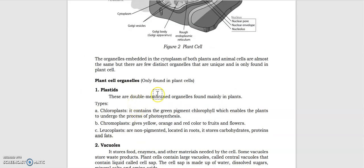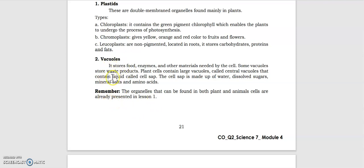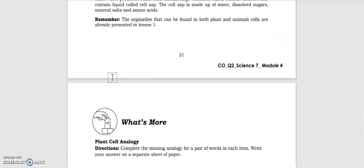Here are the organelles that can be found in plant cells only. We have the plastids - there are double membrane organs found mainly in plants. We have the types: chloroplast contains the green pigment, chromoplast contains the yellow, orange and red color, and the leucoplast - they are non-pigmented. Then we have the vacuoles where it stores food, enzymes, and other materials needed by the cell. Remember, these organelles can also be found in animal cells.